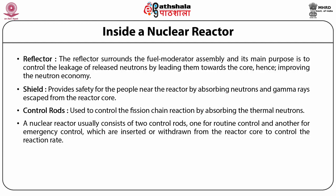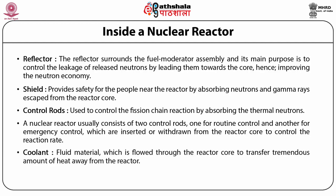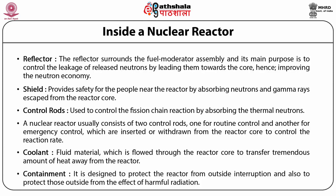A nuclear reactor usually consists of two control rods: one for routine control and another for emergency control, which are inserted or withdrawn from the reactor core to control the reaction rate. Coolant is the fluid material which is flowed through the reactor core to transfer tremendous amounts of heat away from the reactor. The usual coolants are heavy water, carbon dioxide, liquid metals, etc. Finally, the containment is a dome-shaped structure made of a meter-thick concrete and steel around the reactor, designed to protect the reactor from outside interruption and also to protect those outside from the effects of harmful radiations.